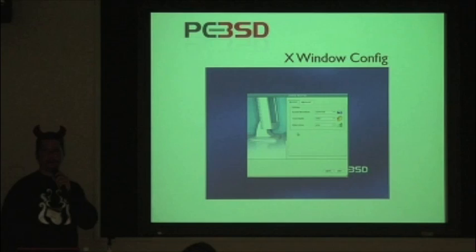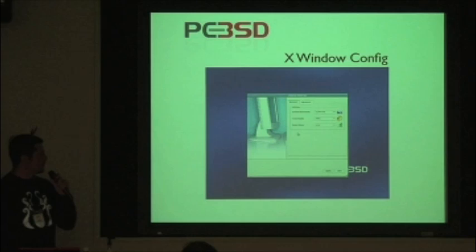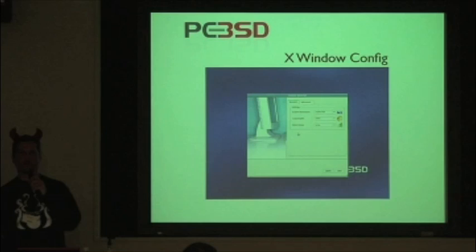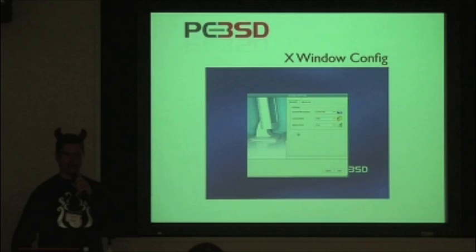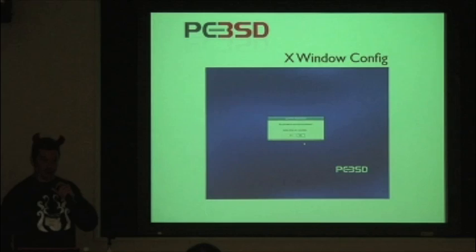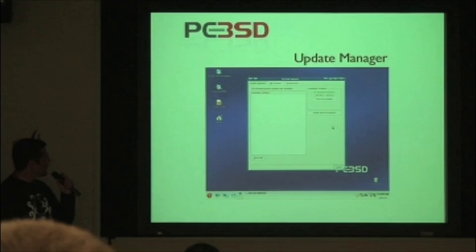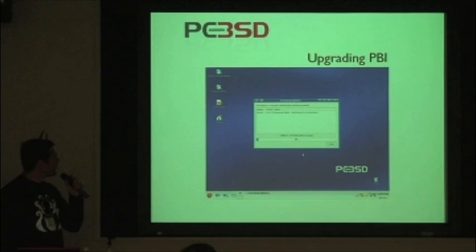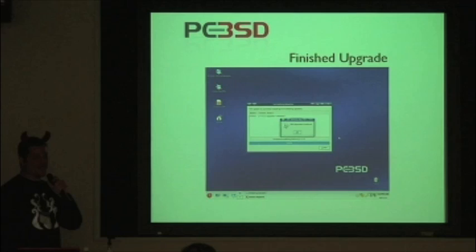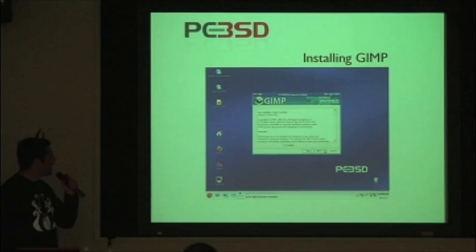We didn't see this yet — this is the X window configurator. If you've got a supported 3D graphics card, you can select it here and be running Beryl literally at startup. When we do trade shows — part of what I do to evangelize FreeBSD — we bring along a 32-inch LCD and throw PCBSD up there with Beryl running. People go nuts over the cube effect and the barrel windows. There's the boot screen and the update manager already checking for a new PBI update.